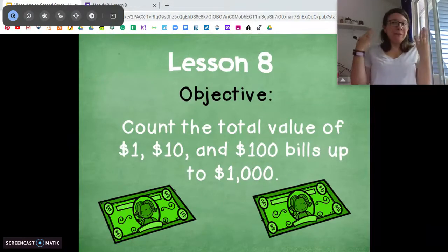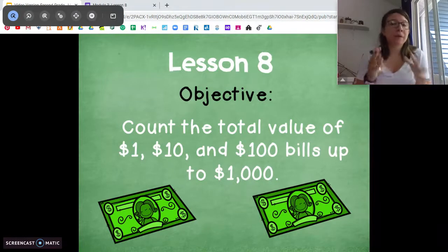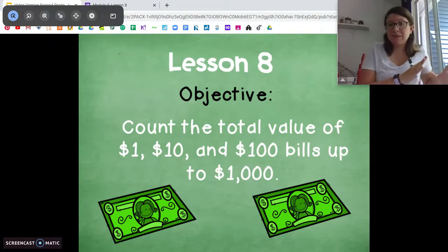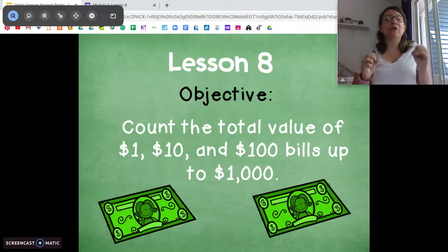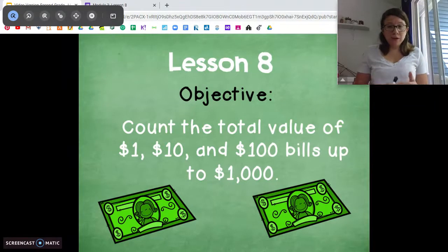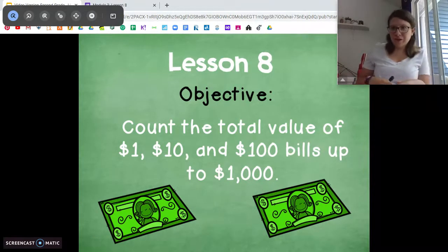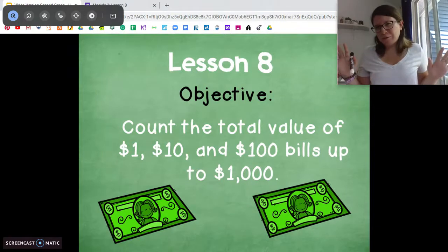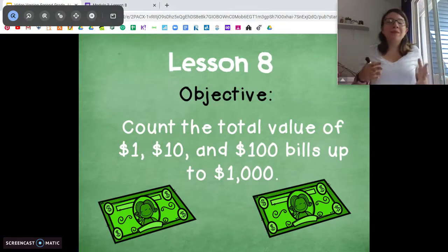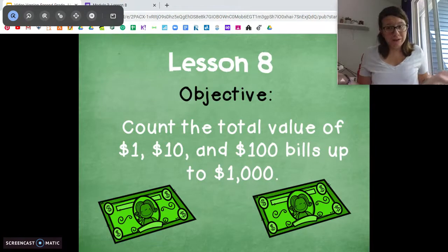So today we're going to be working with money. We're going to be working with coins like we did a couple lessons ago. We're going to be working with dollar bills. What I want you to notice is the similarities between $1 bills, $10 bills, $100 bills, all that stuff. Notice the similarities between that and the base ten units we've been working with. You should notice a lot of similarities.